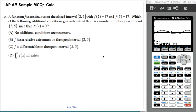This is another calculator problem where the calculator won't be useful. A function f is continuous on the closed interval from 2 to 5. They give us f(2) and f(5). Which of the following additional conditions guarantees that there is a number c in the open interval from 2 to 5 such that f'(c) = 0?